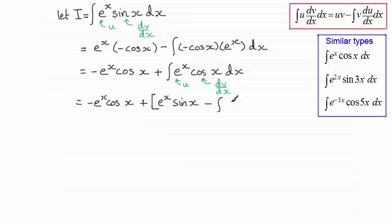I'll put that in brackets there, multiplied by the differential of the u part. Differential of e to the x then is still e to the x, and we integrate all of that with respect to x. And then just close off that bracket, that square bracket there.